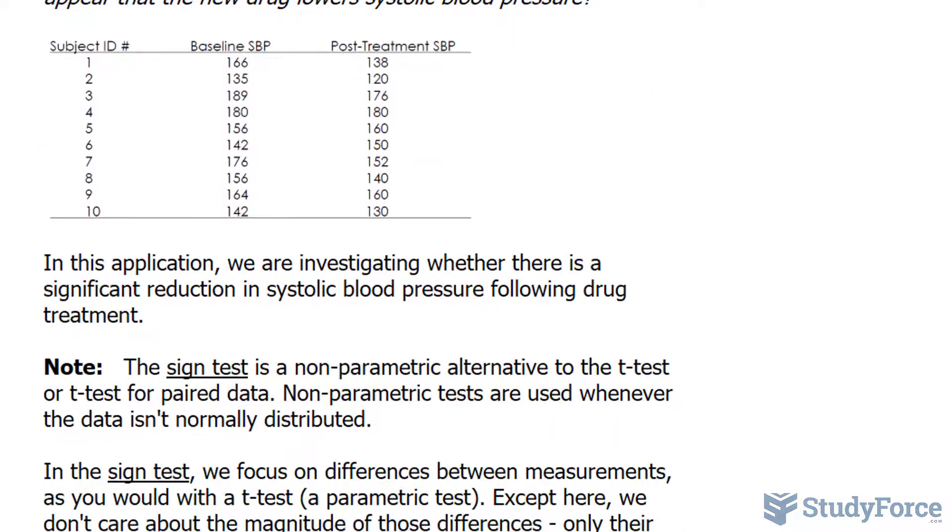Take a look at the table carefully. The first column tells us the amount of subjects, we have 10. The baselines are recorded in the second column, and the third column tells us the post-treatment numbers.